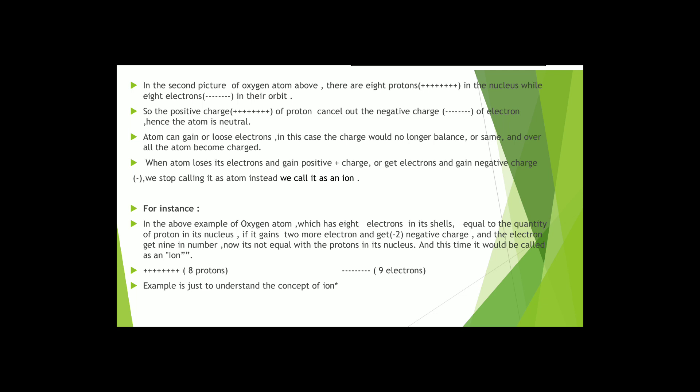When the atom loses its electron and gains positive charge, or gains electron and gets negative charge, then it would no longer be called an atom. It would be called an ion. In the previous example of oxygen atom, which has 8 electrons in its shells equal to the quantity of proton in its nucleus, if it gains 2 more electrons and gets minus 2 negative charge, and the electrons become 10 in number instead of 8, now it would no longer be equal to the protons in the nucleus. So we would call it an ion.